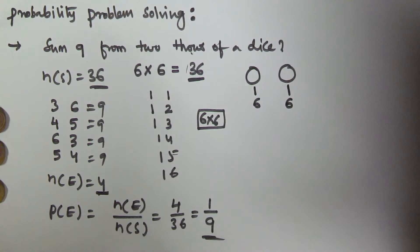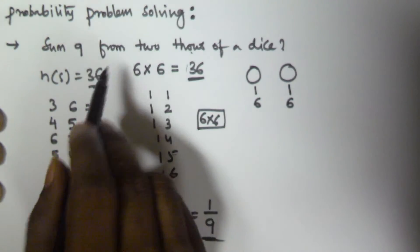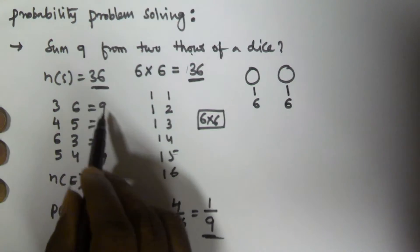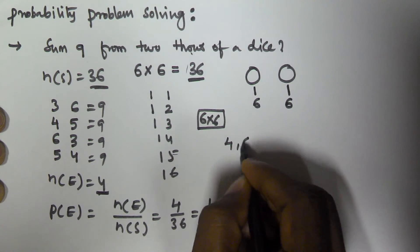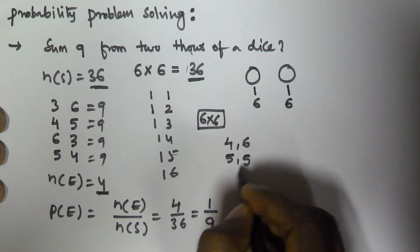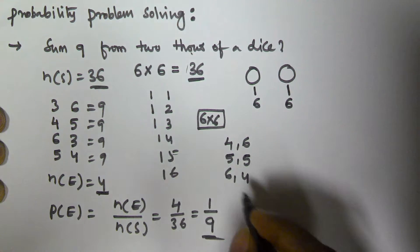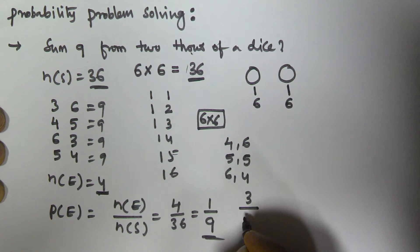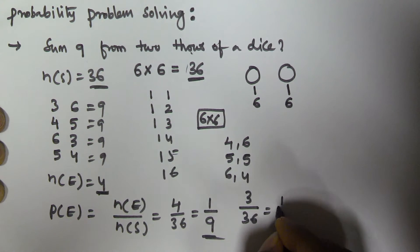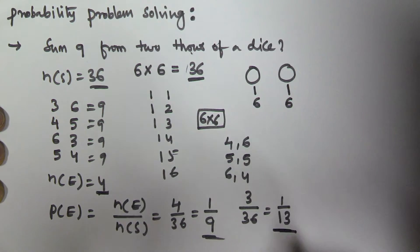That gives us 1/9. Now suppose you want to find the sum of 10 from 2 throws of a dice. You calculate when you will get 10: that is (4,6), (5,5), and (6,4) — so there are 3 favorable cases. The probability of sum 10 is 3/36, which equals 1/12.